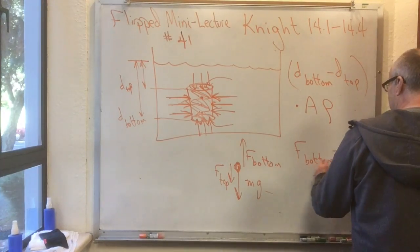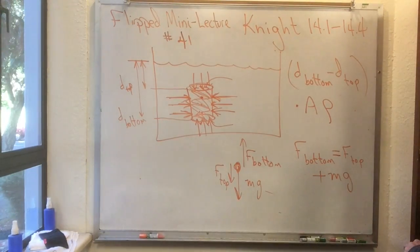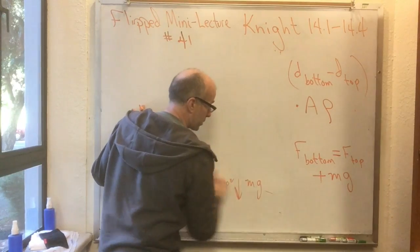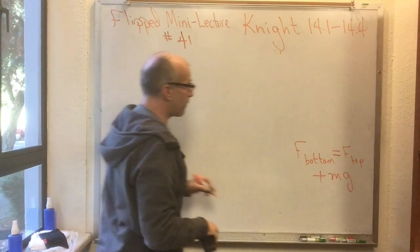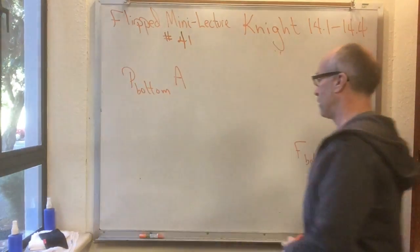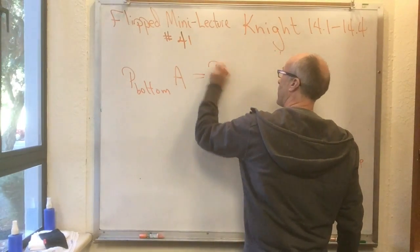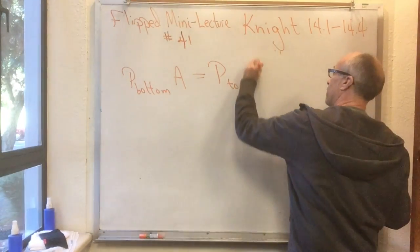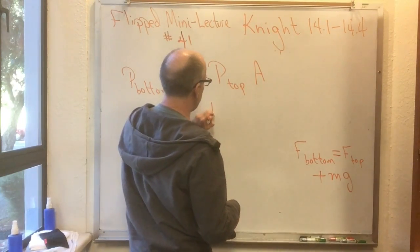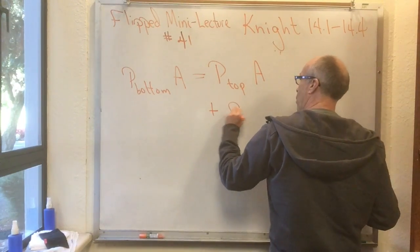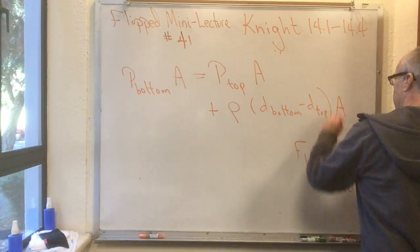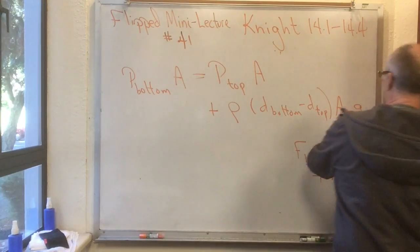Rearranging, F-bottom equals F-top plus mg. Now substituting: F-bottom equals the pressure at the bottom times area A, F-top equals the pressure at the top times area A — and since it's a cylinder, the top and bottom areas are the same. The remaining term is plus mg, where m equals rho times (d-bottom minus d-top) times A.